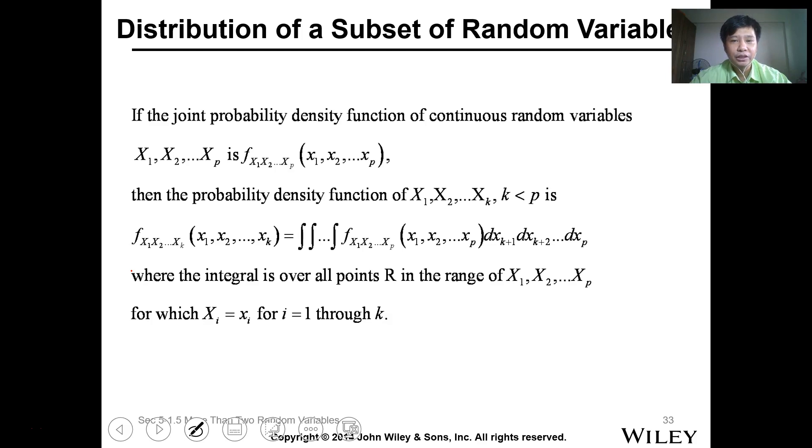If you have a joint probability density function of multiple random variables, from x1 to xp, and this is the probability density function of that random variable as a function of all those variables, then we can express another probability density function which is a subset of that distribution as a function of x1 to xk, where k is less than p.